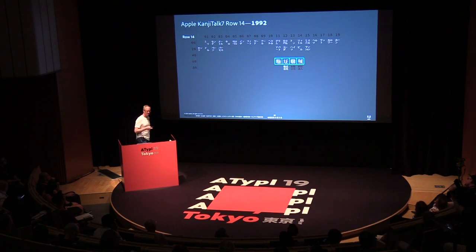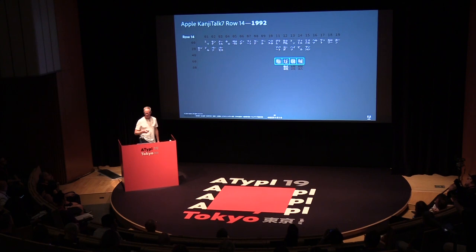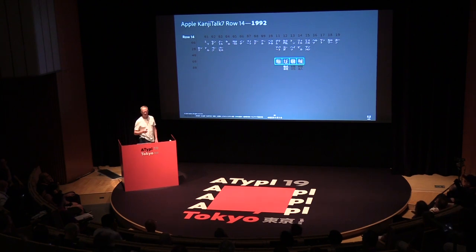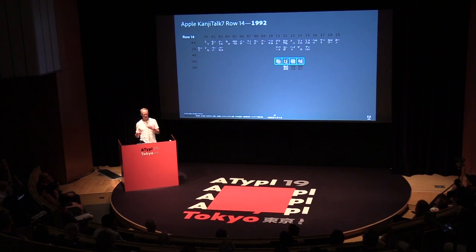Apple also included three four-kanji square ligatures. The first, Kabushiki Gaisha, meaning 'incorporated' or 'corporation,' is in Unicode. The others — Yugen Gaisha, meaning 'limited company,' and Zaidan Hojin, meaning 'foundation' — were never encoded. We have these in fonts, and if you want to access them, you use the DLIG feature.